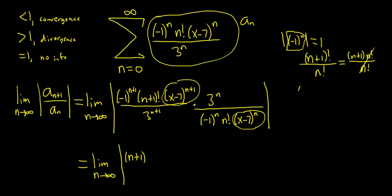What happens here is that you can rewrite the x minus 7 to the n plus 1 as x minus 7 to the n times x minus 7. And then the x minus 7 to the n will cancel. And so we're left with x minus 7 up top. So x minus 7, that takes care of that.